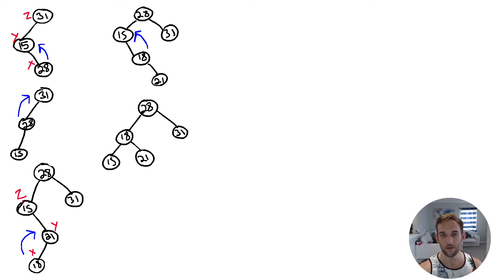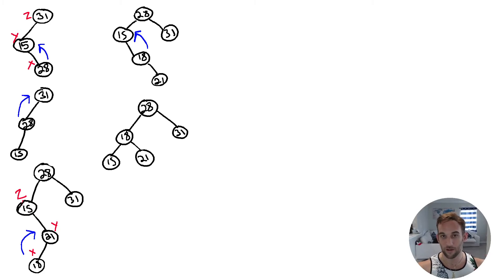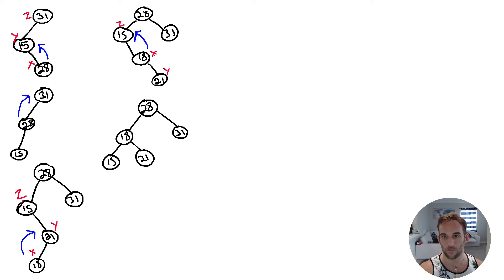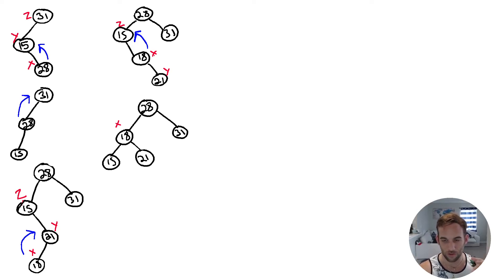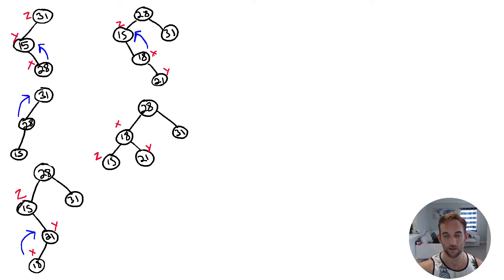Now this is balanced. If you take the root node 28, the left subtree has a height of 2, the right subtree has a height of 1, so 2 minus 1 equals 1 — the balance factor is not greater than 1, so it's balanced. This was a trinode rotation with X, Y, and Z. That's how we're going to be coding things — labeling nodes Z, X, Y, and then doing rotations around those nodes.